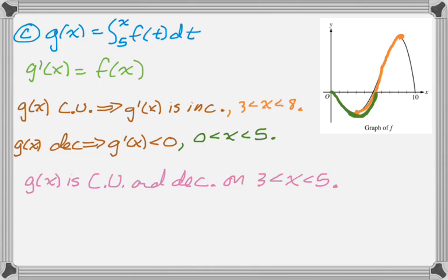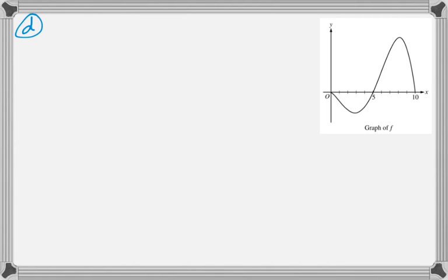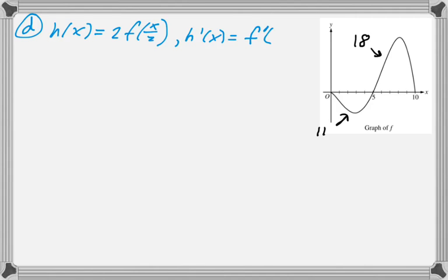Part D is an arc length question. We want to find the arc length of a function from 0 to 20. In that paragraph they tell us that one arc length is 11 and another is 18. h(x) is defined as 2f(x/2). h'(x) is given to you - I think because if you get it wrong you're doomed. So h'(x) = f'(x/2).